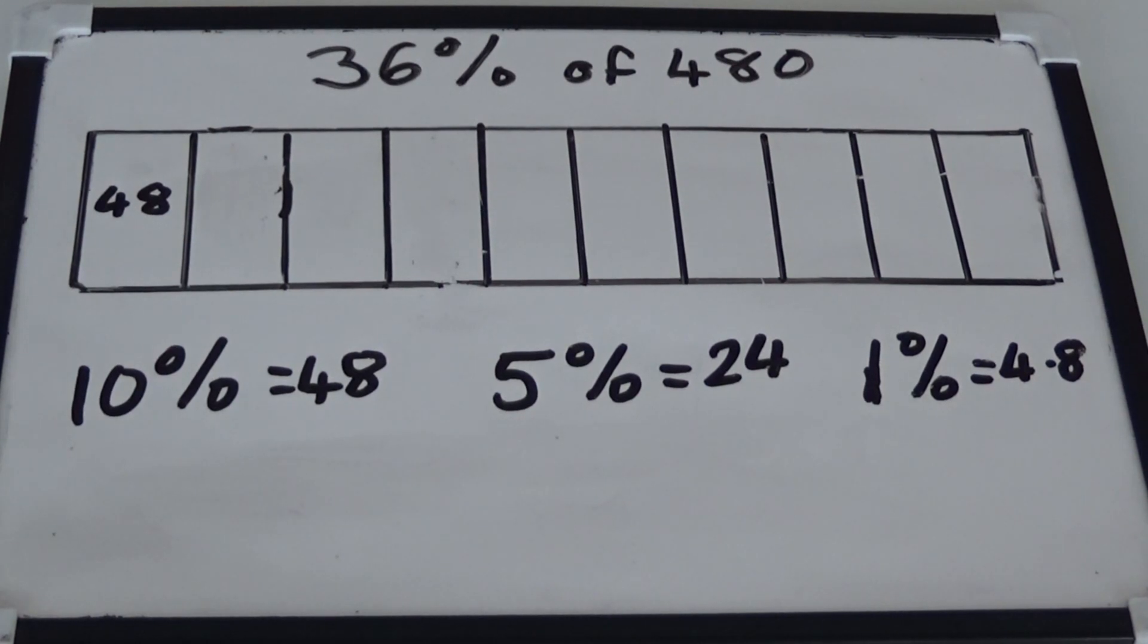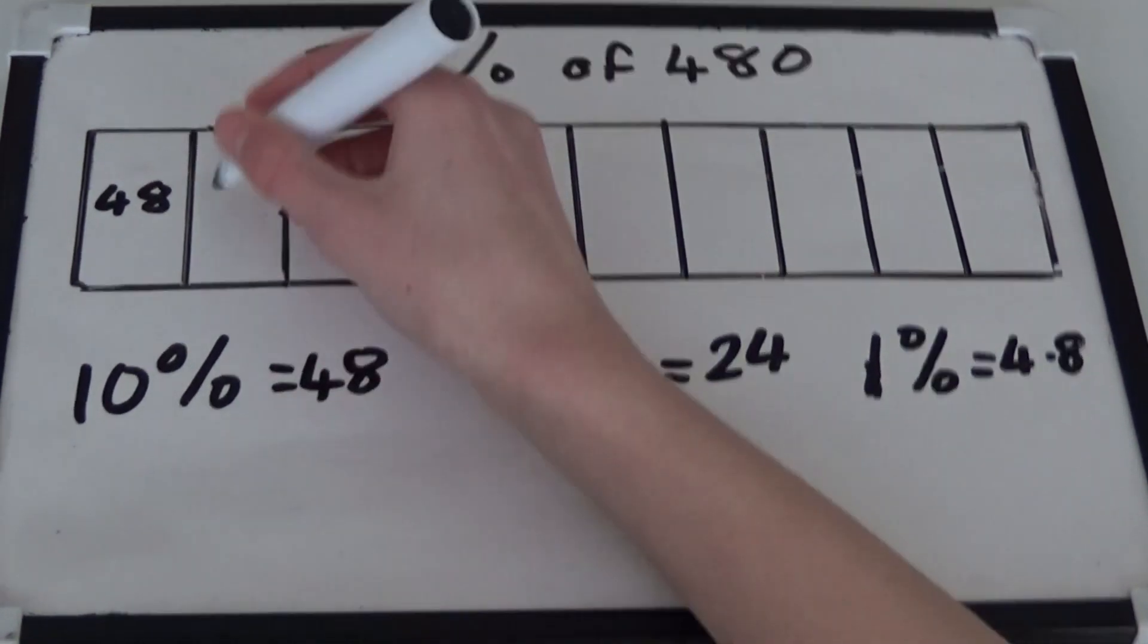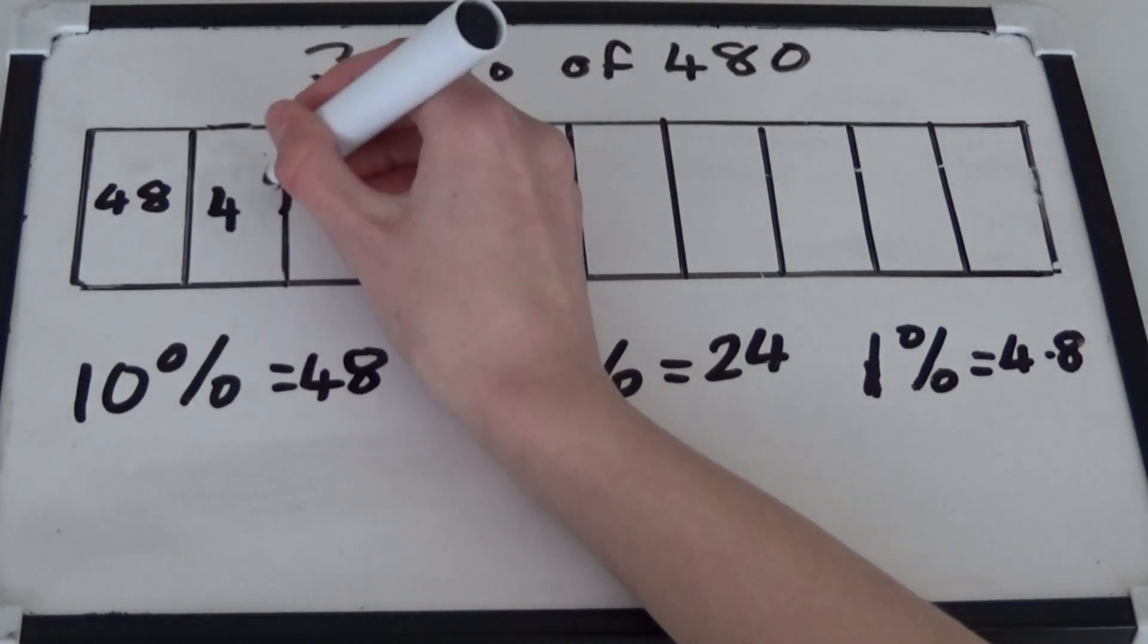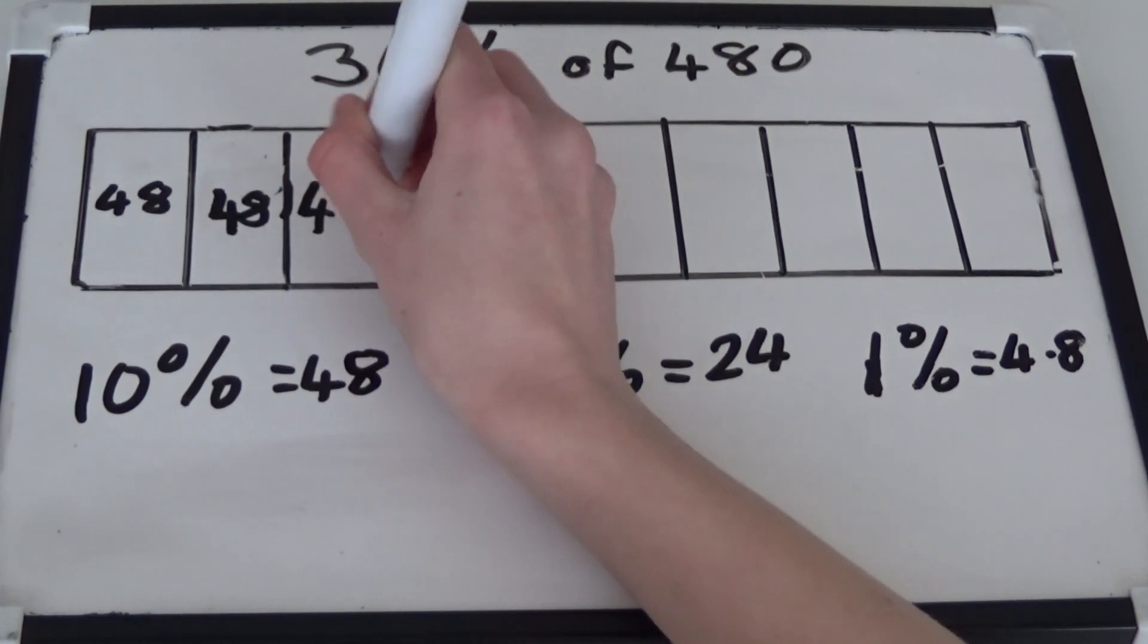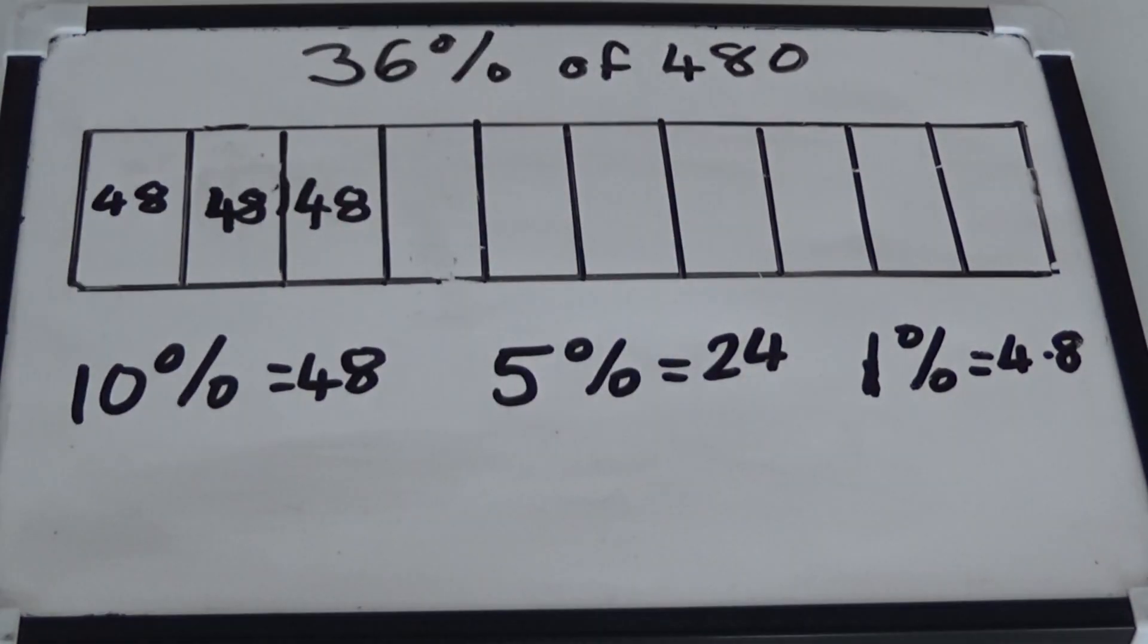Now we've worked out what 10%, 5% and 1% equal, we can add them together to work out what 36% equals. We know that 10% equals 48, so 30% must be 3 lots of 48. 48 times 3 equals 144, so 30% of 480 equals 144.